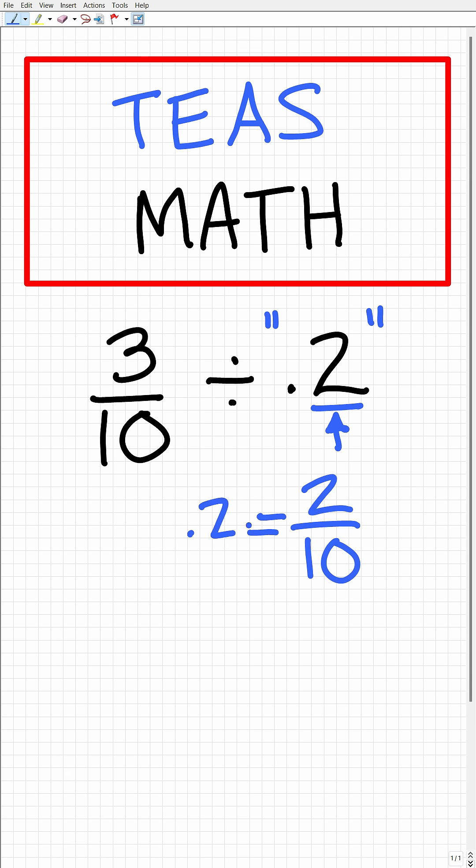All right, so the decimal 0.2 is equivalent to the fraction 2 tenths. All right, so now our problem is 3 tenths divided by, not 0.2, but the fraction 2 tenths.